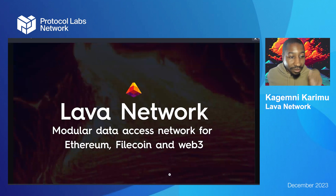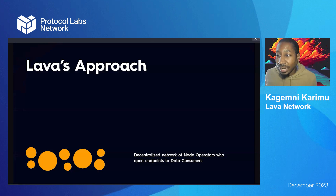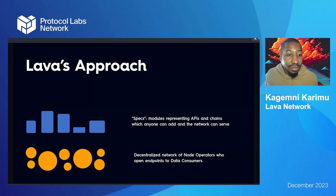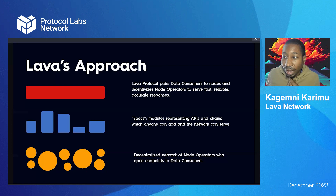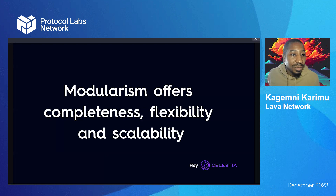Lava Network offers modular data access for Ethereum, Filecoin, and all of Web3. The basic idea behind Lava's approach is there's a decentralized network of node operators. There are open endpoints. We use Specs, which is a modular system for representing APIs and chains anybody can serve. Then the Lava protocol pairs data consumers to nodes and incentivizes node operators to serve fast, reliable, accurate responses.